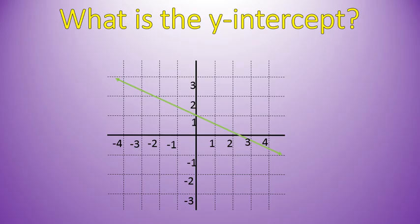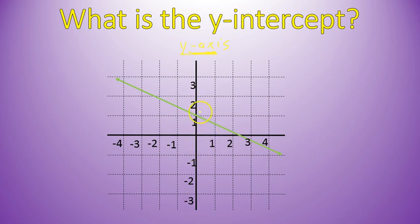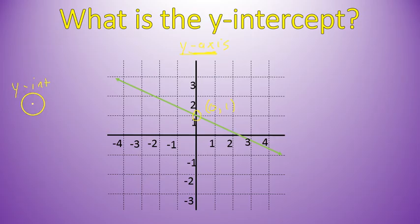Here's a practice one for you. I want you to tell me what is the y-intercept of this green line. Where does this green line cross the y-axis? Pause the video and try it out. The y-axis is the vertical line going this way. My green line crosses it right here at the point 0, 1. So my y-intercept is equal to 1. That's how you find the y-intercept — it's the place on the y-axis where the line crosses.